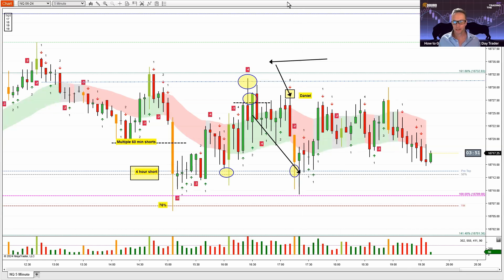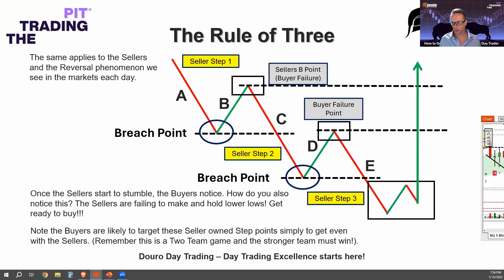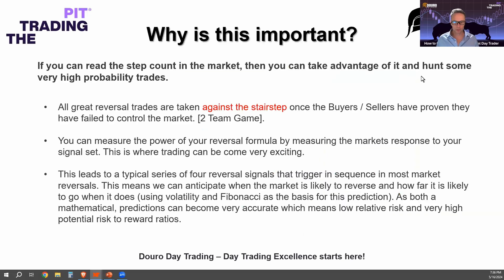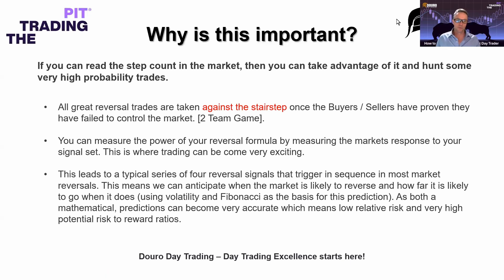Volatility of the market defines your target. If in doubt when you start trading, you can literally just go for a $100 target — $100 on the way up and $100 on the way down. You can carve a pretty cool little career out of trading using what we call a 22-target on the Nasdaq, which is a $100 US dollar target. If you can read the step count in the market — those two steps or three steps — you get to take advantage of it and hunt very high probability trades. Please understand all great reversal trades are taken against the stair step of the market, once buyers or sellers have proven they have failed to control the market.